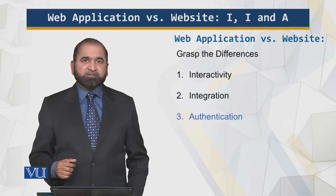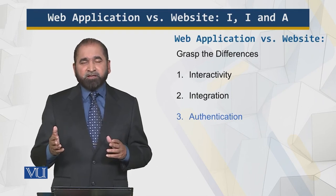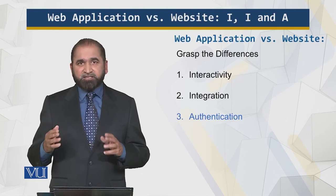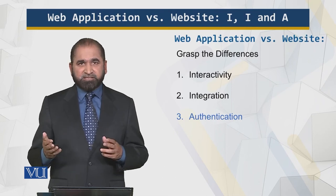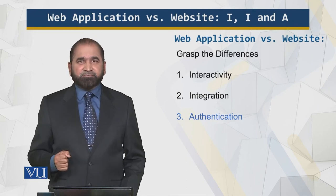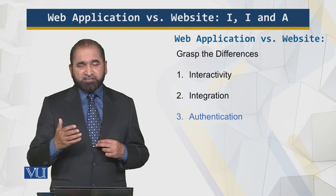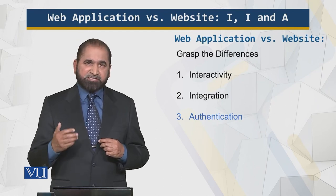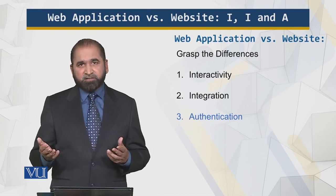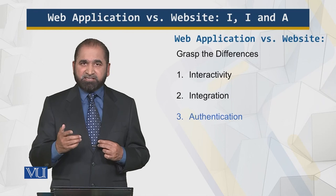Then there is authentication. Authentication means I need to log in, give my username and password, and in that way have access to my personal information. To prevent other people — even those with malicious intent — from accessing my personal information, it has to be protected. When creating a password, the system advises making it secure and robust so hackers cannot break in. Social networks and email accounts contain personal information that must be protected through authentication.